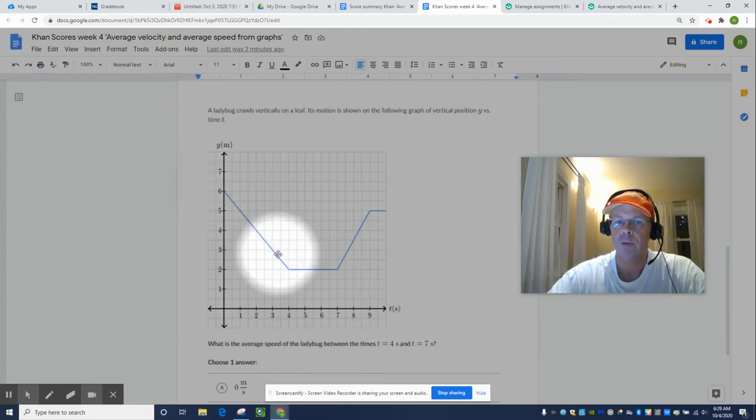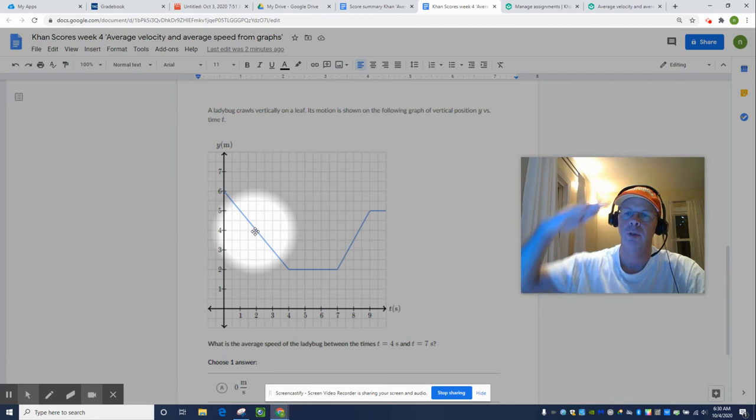And this graph is telling us a little story. At zero seconds, the ladybug is six meters above the ground, and then is five meters above the ground at one second, four meters above the ground at two seconds. So the ladybug goes from a high position to a low position.